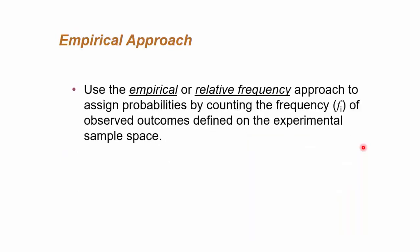The next is the empirical approach of the objective approach to probability. Now when you say empirical, it basically is collection of real-time data or past data. And we look at the relative frequency of a particular event happening over the total number of events that have happened in the sample space.